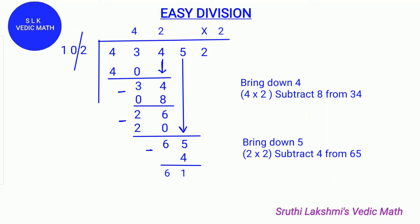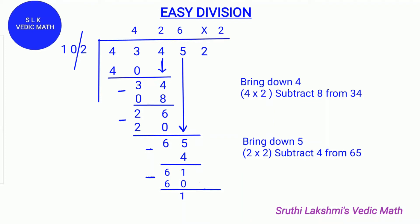Then we do the last digit of the quotient times the last digit of the divisor: 2 times 2 is 4. We write 4 below 65. Next we do 65 minus 4, which gives us 61. Next we find how many tens can fit in 61. Six tens can fit, so we write 6 on the quotient line and do 10 times 6, which is 60.